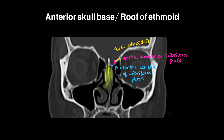The cavities below the olfactory fossa are the olfactory clefts or olfactory recesses, and the olfactory fossae are seen in green, one on the right and one on the left.